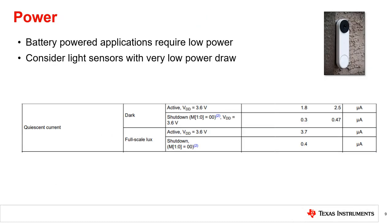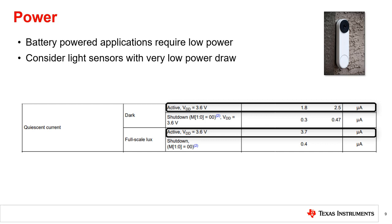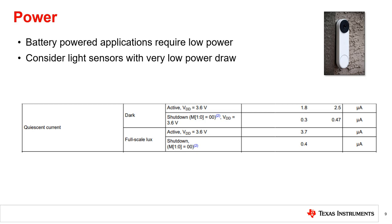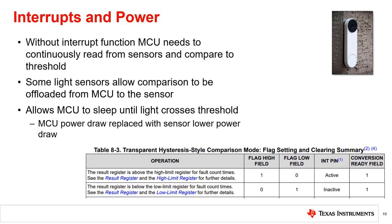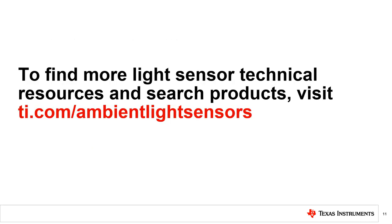In some applications, such as video doorbells, the product is battery powered and expected to last for long periods of time. In these cases, using a light sensor with very low power draw, such as TI's OPT-3005, will minimize the effect of the sensor on the overall system power draw. Another important consideration in low power applications is how often the microprocessor needs to read from the sensor. In light sensors without an interrupt functionality, the microprocessor must continually read from the sensor and compare it to the threshold. Some light sensors, such as TI's light sensor portfolio, support integrated comparisons with programmable thresholds, different types of interrupt modes, and support an interrupt pin. These features allow the microprocessor to sleep and only wake up to action when the light level crosses the threshold between day and night, greatly reducing the MCU active time.